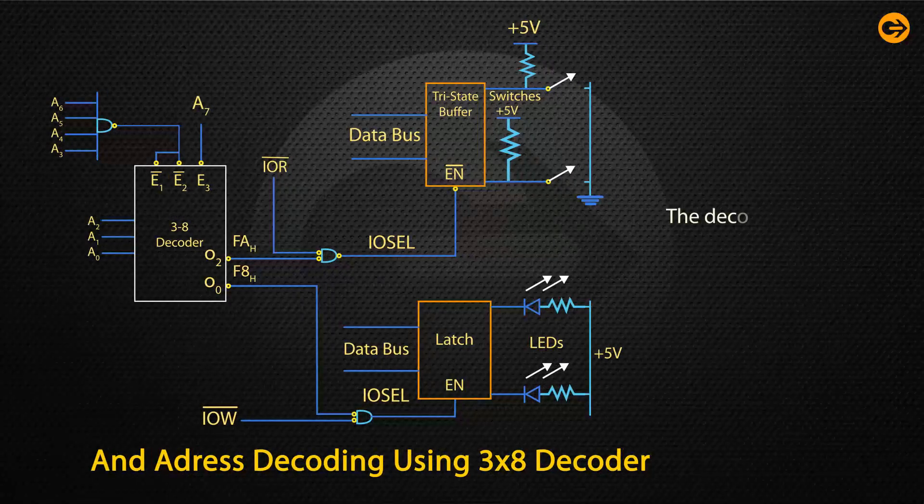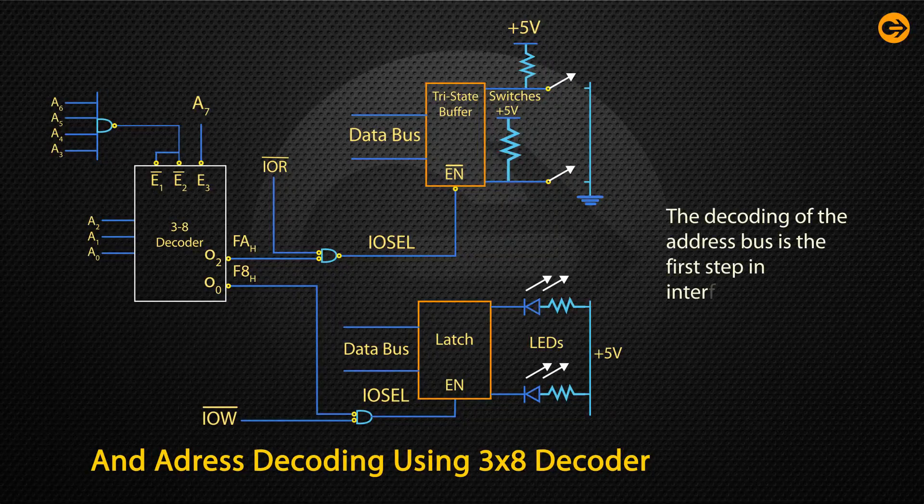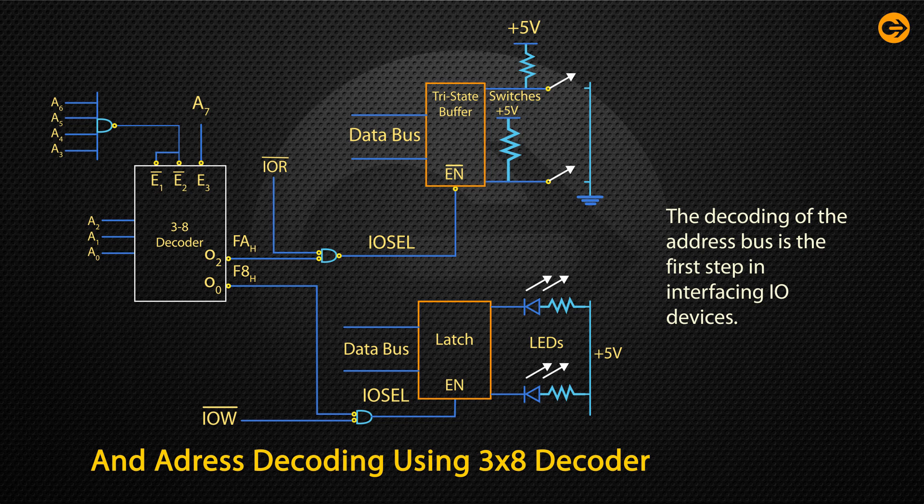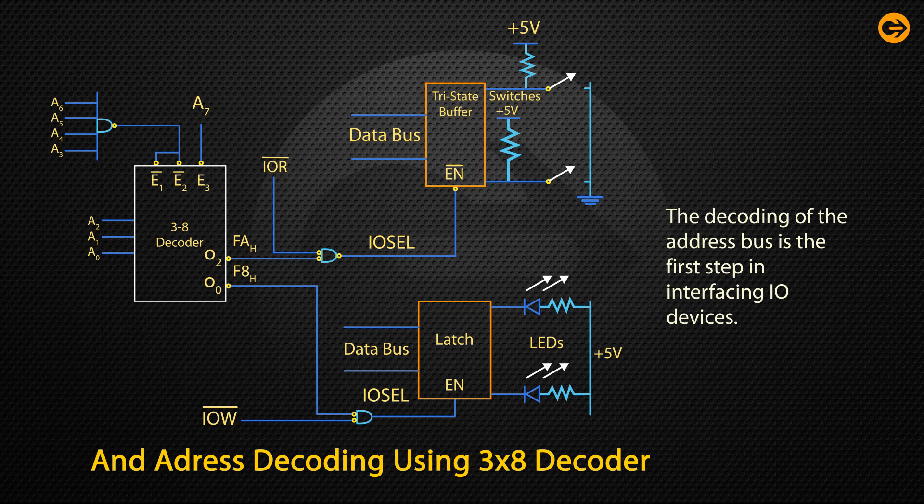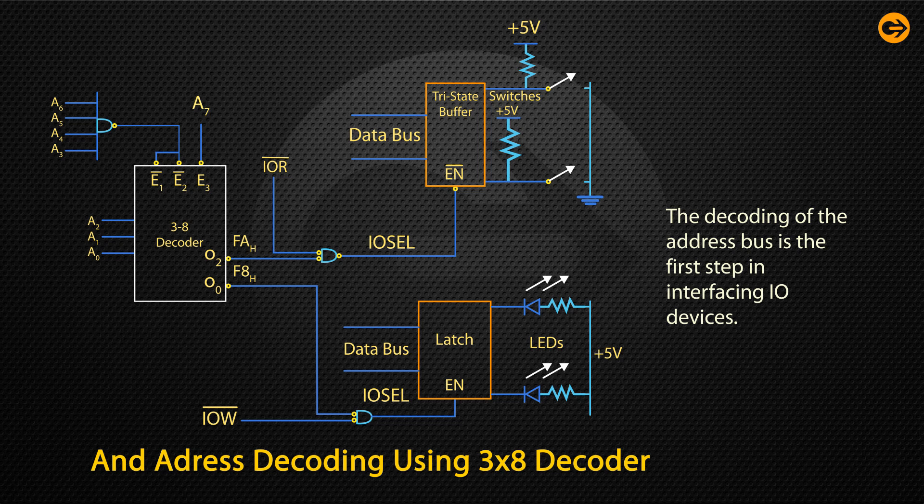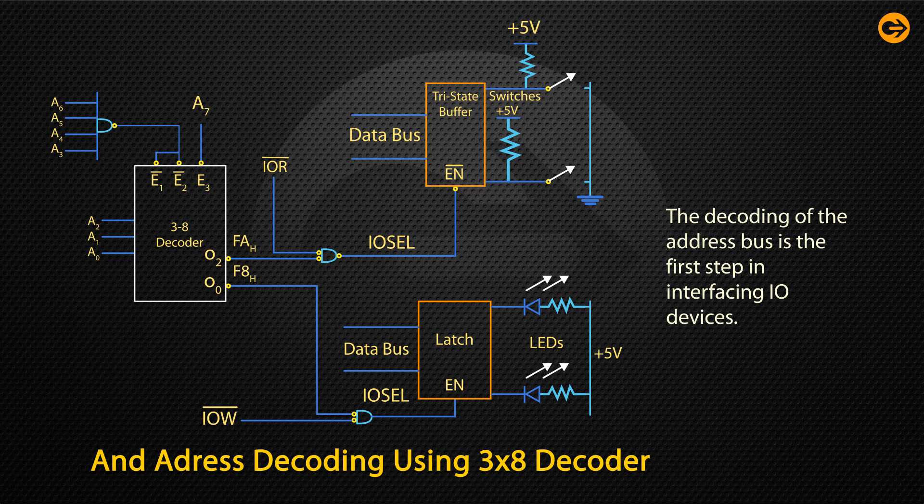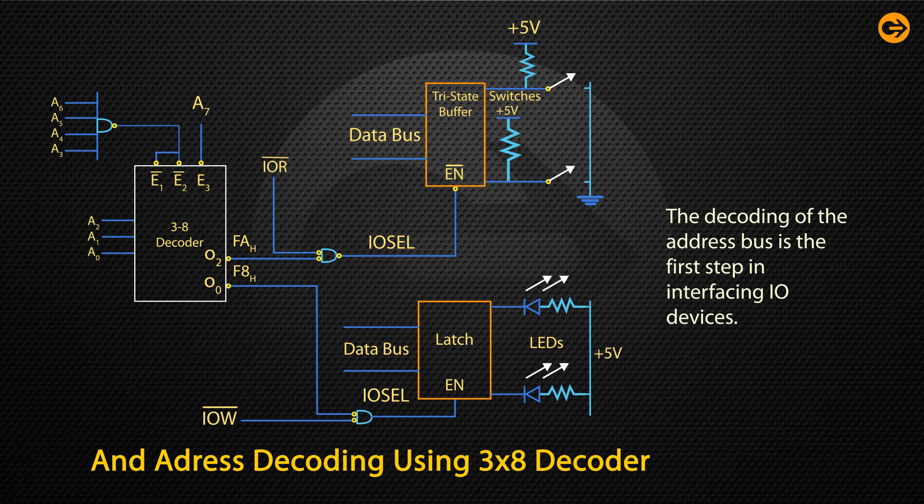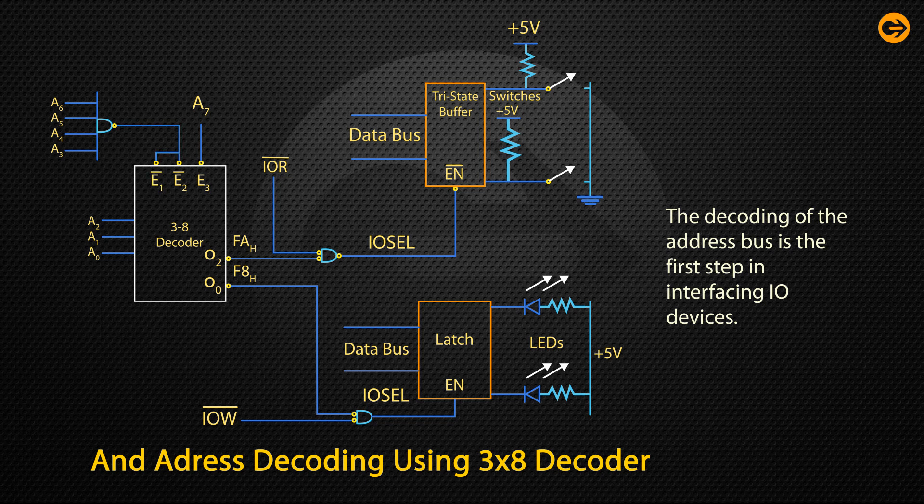The decoding of the address bus is the first step in interfacing I/O devices. The address lines A2, A1 and A0 are used as input to the decoder and the remaining address lines A7 to A3 are used to enable the decoder. The address line A7 is directly connected to A3 and the address lines A6 to A3 are connected to A1 bar and A2 bar using the NAND gate.